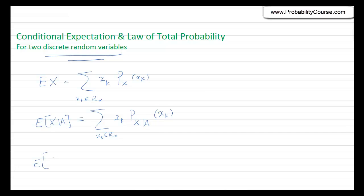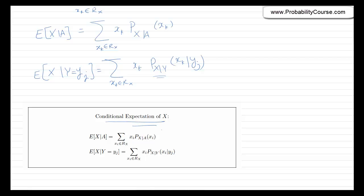For example, event A can be the event that another random variable Y equals yj. In that case, the conditional expectation can be written as sigma xk * px|Y(xk | yj). This was the notation introduced in the previous video for the conditional probability mass function. To summarize: the conditional expectation of X given A is obtained by sigma xi * px|A(xi), and in particular we can look at the conditional expectation when we know the value of a random variable Y.